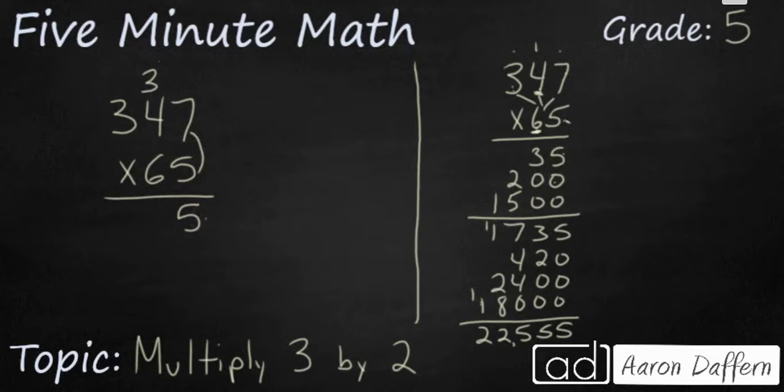We ignore it for a moment. We take this 5. And then we multiply it here by the 4. So 5 times 4 is going to be 20. But then we add that extra 3 tens we had. So 20 plus that extra 3 is going to be 23. Since we have another place to go, we're going to simply write the 3 right there. And we're going to write the 2 right there. So there's my 23.